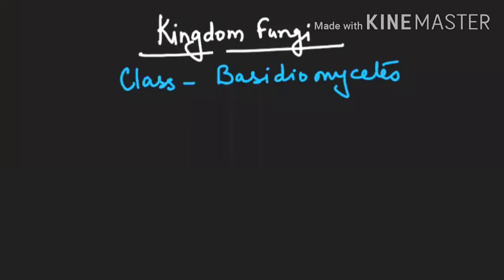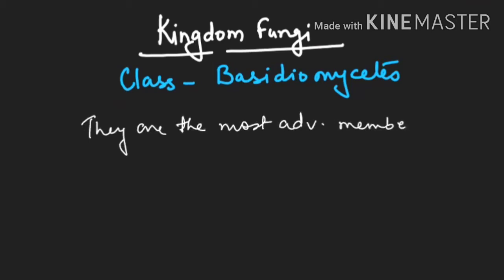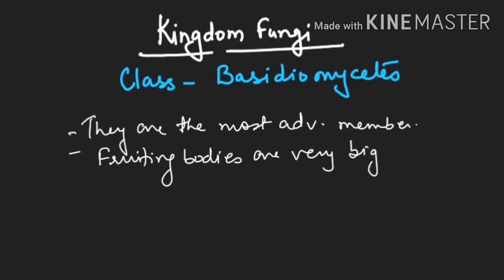Hello students, welcome back to my channel. In this video we are going to discuss the general characteristics of the class Basidiomycetes of kingdom Fungi. Basidiomycetes are the most advanced members of kingdom Fungi, and the fruiting bodies which they make are visible — for example, mushrooms. The fruiting bodies are very big in size and visible to our eyes. Mushroom is one which we consume; it is edible.